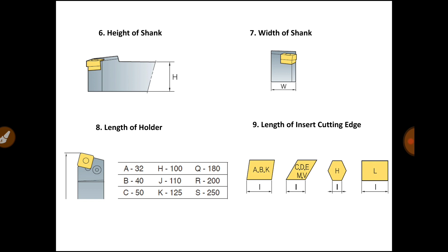Location 8 denotes the length of the holder. If letter A is written, the holder length is 32 mm; letter B is 40 mm; letter C is 50 mm; letter H is 100 mm; letter J is 110 mm; letter K is 125 mm; letter Q is 180 mm; letter R is 200 mm; and letter S is 250 mm. In our designation, letter M is written.